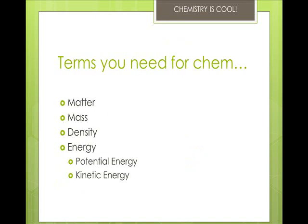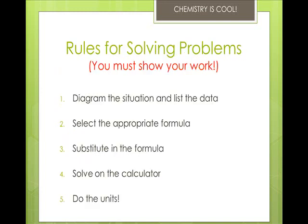Some terms you need for chemistry. Matter is anything that has mass and occupies space. Mass is the quantity of matter in a substance, and density is the mass divided by its volume. Energy is the ability to do work. Potential energy is stored energy, such as in a wound spring or energy in wood before it's burned. Kinetic energy is the energy in motion, such as a car zipping along.